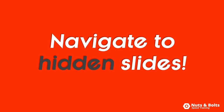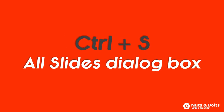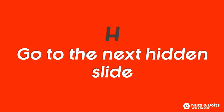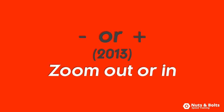So those are your keyboard shortcuts for quickly jumping around between slides within your presentation, including how to navigate to hidden slides. You have Ctrl+S to open the slide navigation dialog box, you can hit the slide number and then Enter to jump to that slide, and if the next slide is hidden you can hit H to move to it. In PowerPoint 2013, you can use the plus or minus signs to zoom in and out as another navigation method.